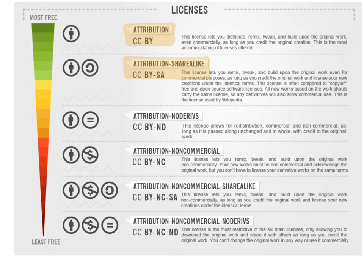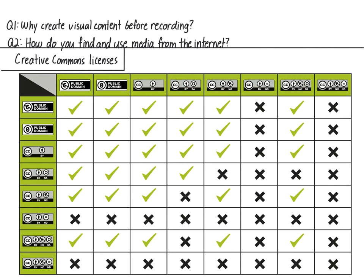If you want to license your own video under a Creative Commons license, you can do that too — it's what I plan to do with all my videos. But keep in mind that some licenses are not compatible. Here is a chart showing what licenses are compatible, in case you are considering licensing your own video with a Creative Commons license. For example, you can't license your own video under a CC BY-SA license if it has media in it with a no-derivatives license. I recommend licensing your video with a Creative Commons license and making that license as permissible and open as possible.